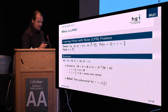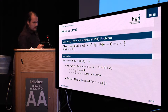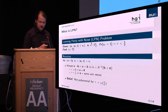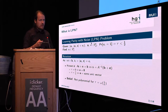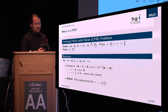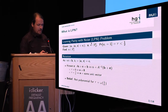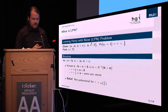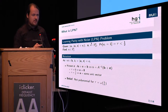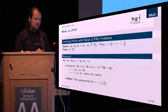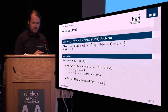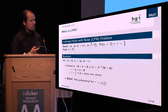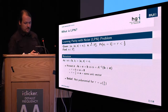Let's start with the definition. The LPN problem means Learning Parity with Noise, and it's a mathematical problem stated as follows. Imagine you have an oracle that gives you samples of the form: a random vector a_i, and the scalar product of this random vector a_i with the secret vector s, plus an error bit which is 1 with probability τ, where τ should be smaller than one half. The goal is to find the secret vector s.